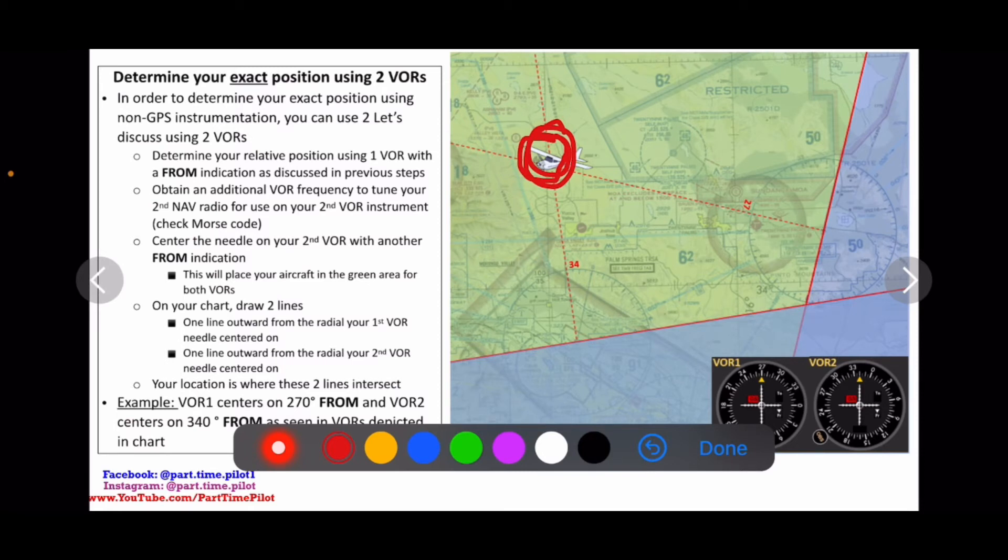And then what we do is we go to VOR one, we turn the OBS until we get a from indication and the needle is centered. And when we do that, it centers in this example at two seven zero.